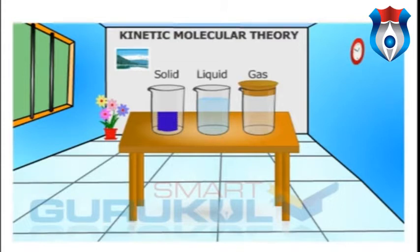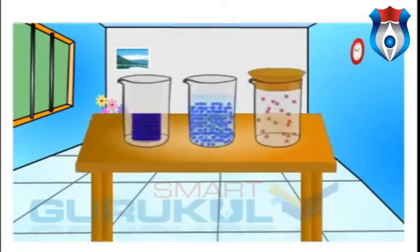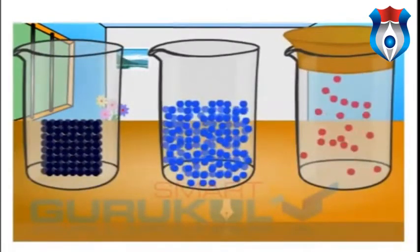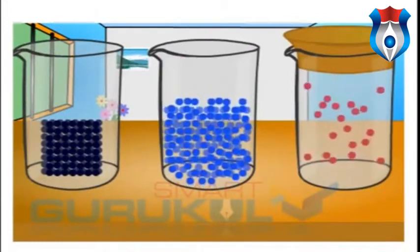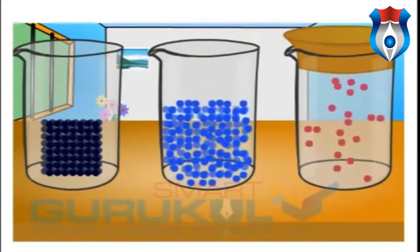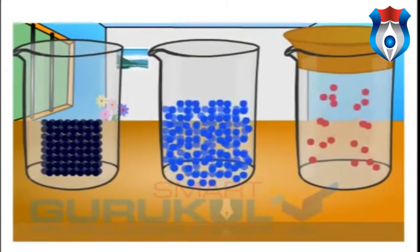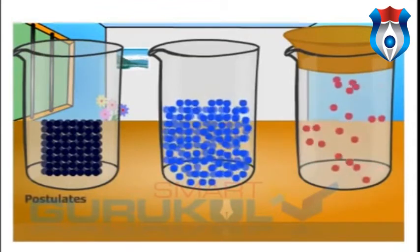The kinetic molecular theory visualizes that any substance, whether solid, liquid, or gas, is made up of atoms, molecules, and ions which are in constant motion.